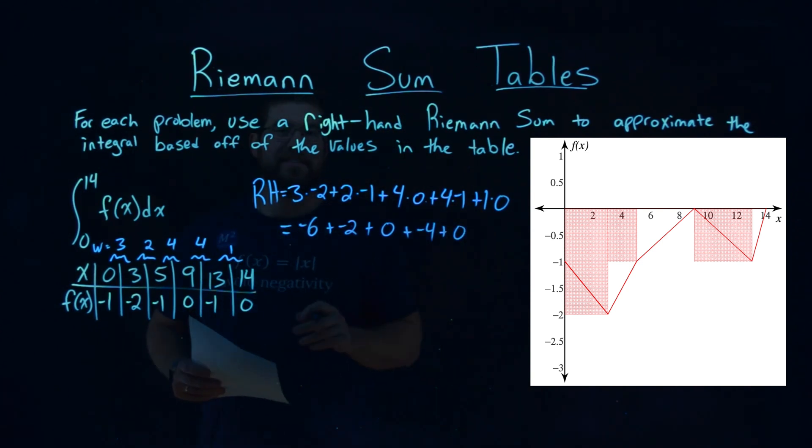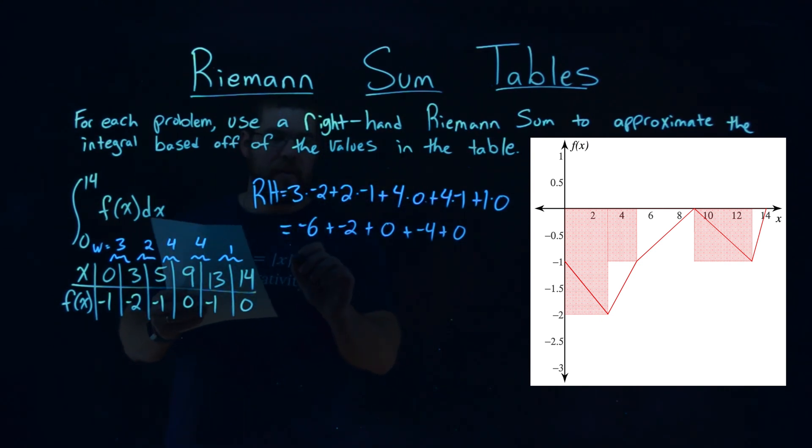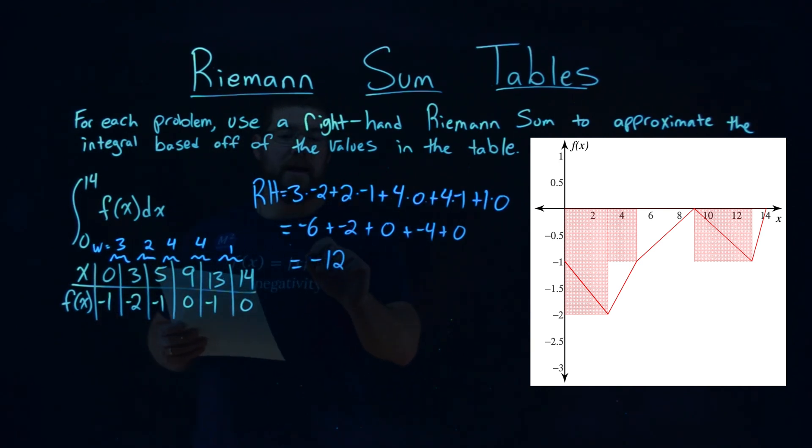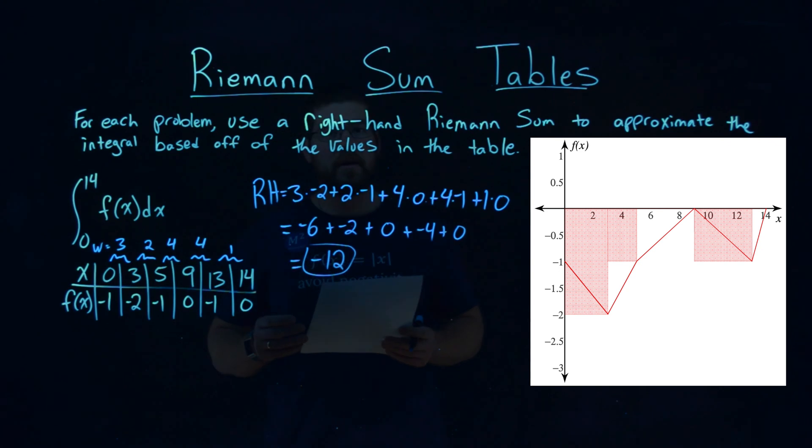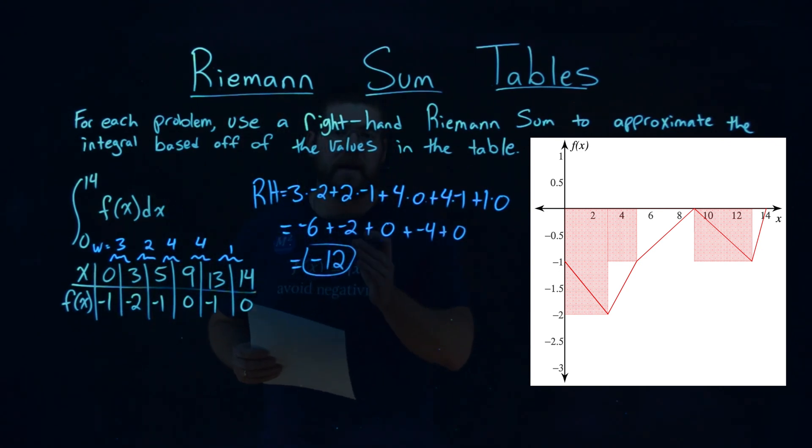This represents the area of each one of these rectangles for the right-hand Riemann sum. But we have to add them all up to get the total value. And when we add negative 6 plus negative 2 plus 0 plus negative 4 plus 0, we get negative 12. So using the right-hand Riemann sum to approximate this integral from 0 to 14 of f of x dx, we get a value of negative 12.